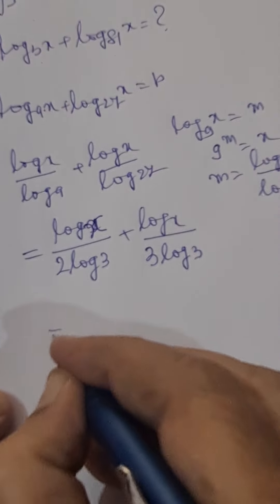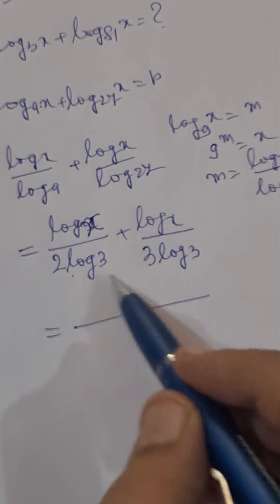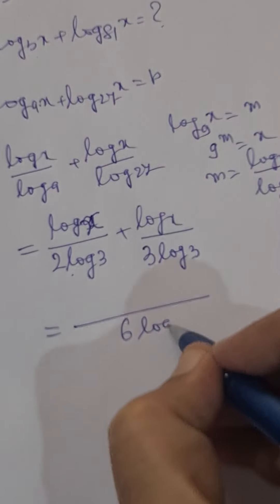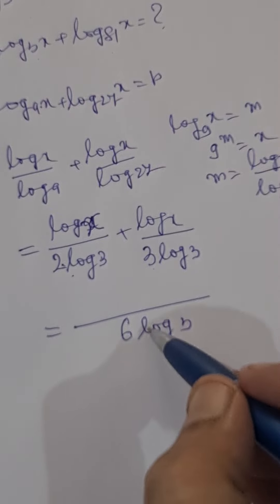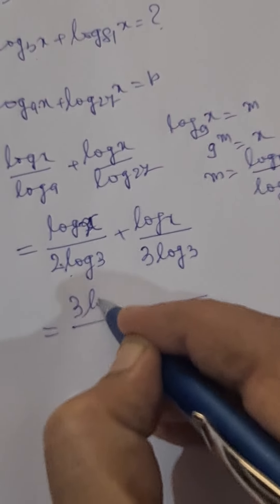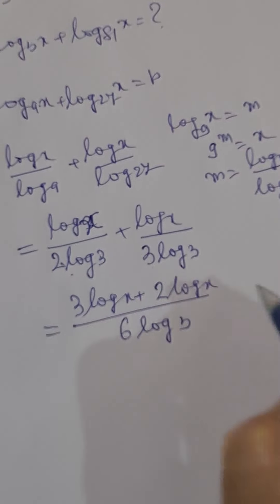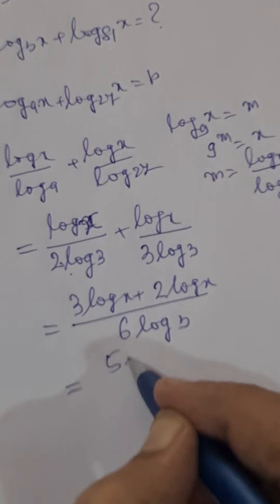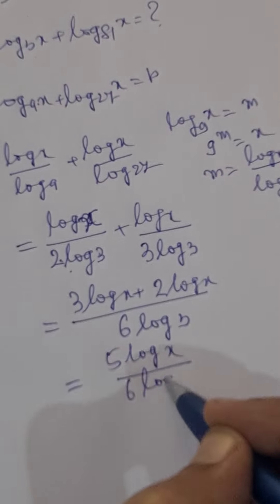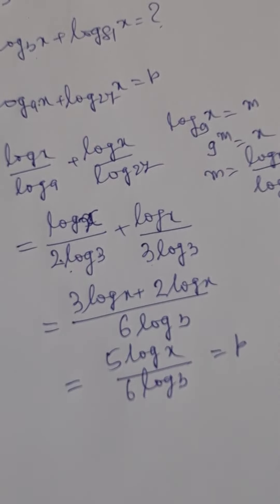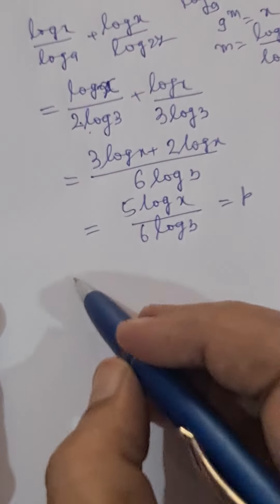We can add these terms. The LCM of 2 log 3 and 3 log 3 is 6 log 3. So we get 3 log x plus 2 log x, which gives 5 log x divided by 6 log 3, equal to p.